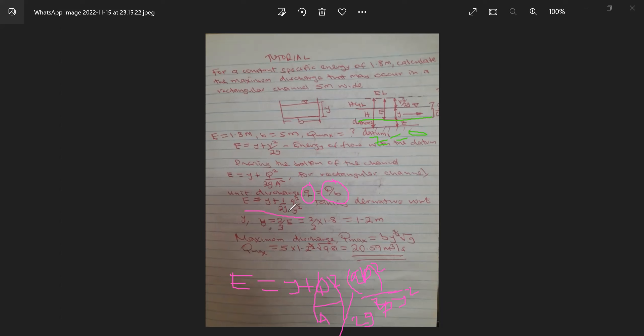But now, if we make Y the subject, this Y here the subject, and we differentiate with respect to Y, you will find that Y is equivalent to 2 over 3 times energy head. So which is 2 over 3 times our energy head we were given as 1.8, which Y will be equivalent to 1.2 meter.